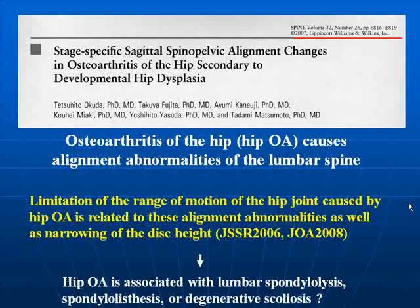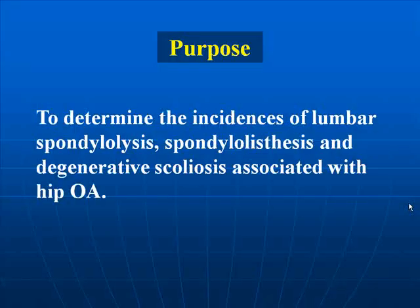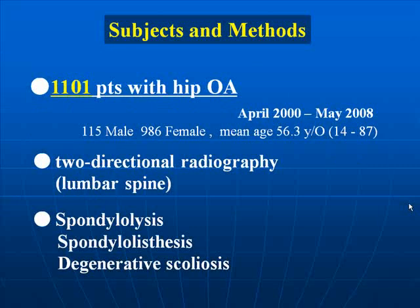The purpose of this study is to determine the incidence of lumbar spondylolysis, spondylolisthesis, and degenerative scoliosis associated with hip OA. During the period from April 2008 to May 2008, 1,101 patients with hip OA who were admitted to our department for surgery and who underwent two-directional radiography of the lumbar spine were included in this study. All radiographs were read by a single spine surgeon who determined the presence or absence of lumbar spondylolysis, spondylolisthesis, and degenerative scoliosis.